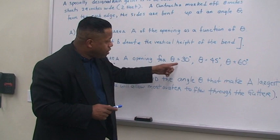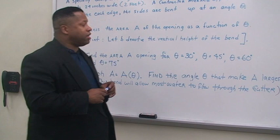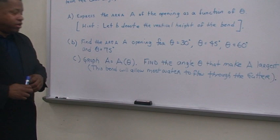In part B, find the area A opening for theta at thirty degrees, theta also at forty-five degrees, theta at sixty degrees, and theta at seventy-five degrees, respectively.